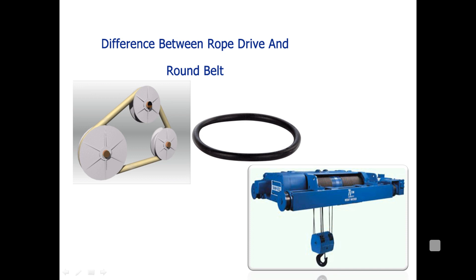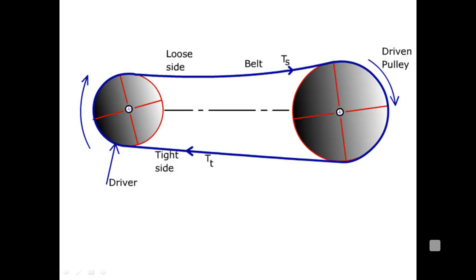Finally, the difference between rope drives and round belts: rope drives and circular belts have a circular cross-section, and corresponding groove pulleys are used with them. You can observe from the diagrams the difference between circular cross-section belts and rope drives.